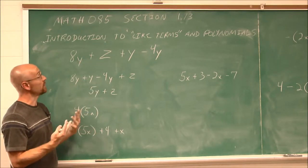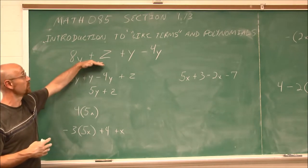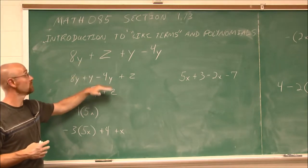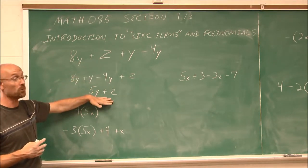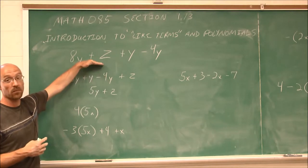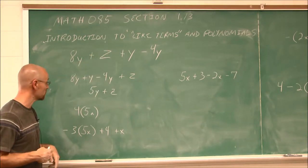So I have 5y plus z. Because these are not like terms, I can't go any further — that's where we stop. We've simplified this as far as we can go, and I'd rather have a binomial than a polynomial with more than three terms.